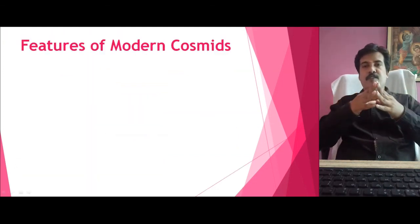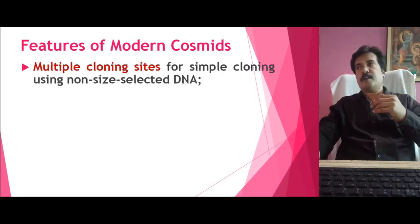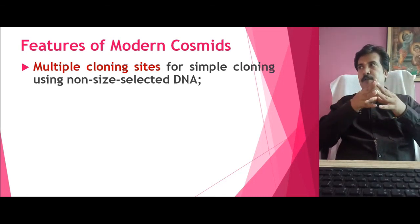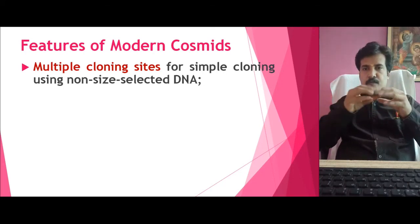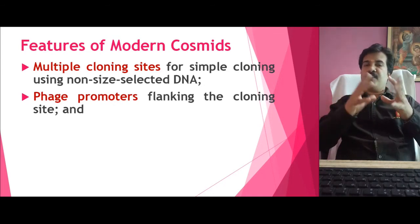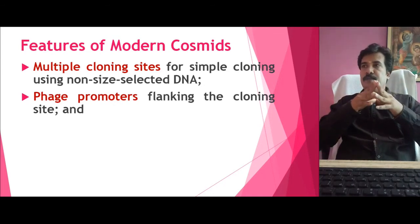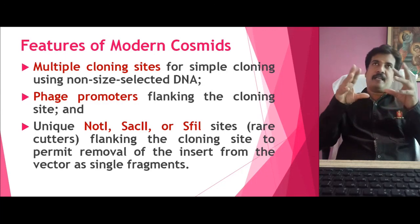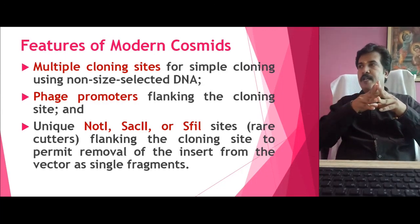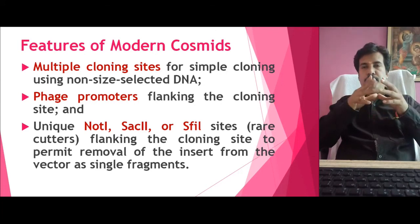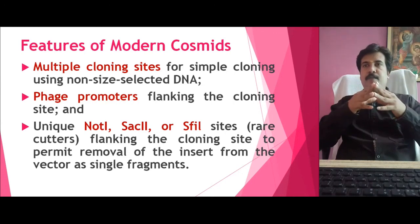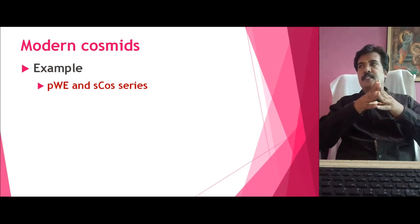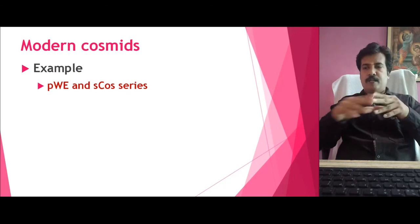We will study some basic features of the modern Cosmids that have been developed. The modern Cosmids are developed with certain additional features: they carry a multiple cloning site which can easily accommodate non-sized DNA. Apart from that, phage promoters have been included into the cloning site. And certain rare-cutting restriction endonucleases like NotI, SacII, and SfiI have also been included. This has provided a dramatic modernization of this Cosmid. A few examples of the modern Cosmids are the pWE and sCOS series, which have been widely used as modern Cosmid vectors.